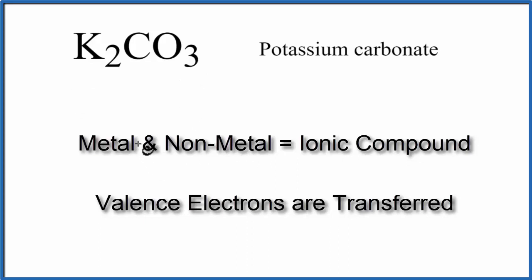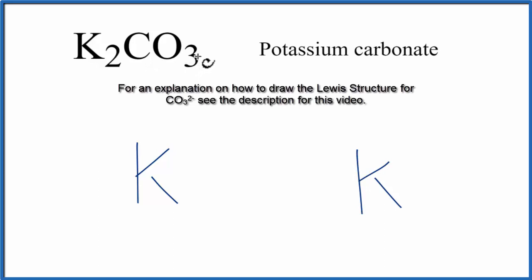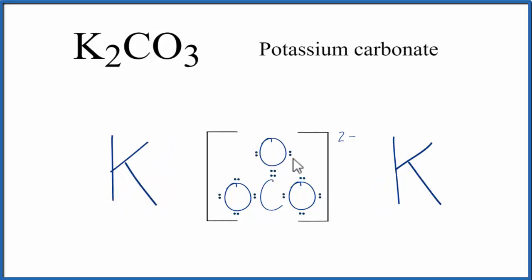So let's put K — we have two of them — and then we'll put the carbonate ion in the middle. Potassium is in group one on the periodic table, has one valence electron, and it loses that valence electron to the CO3 here.